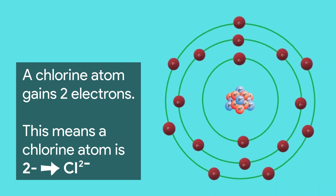Atoms can also gain electrons. Consider if chlorine gains one electron — then the atom has 18 electrons, but only the normal 17 protons. This results in a negative charge of 1. An atom carrying a negative charge is called an anion. Many anions end in the suffix "-ide", so chloride is a chlorine anion.